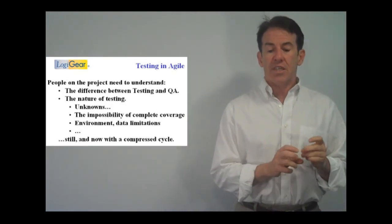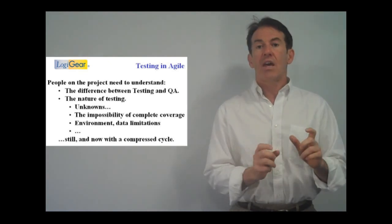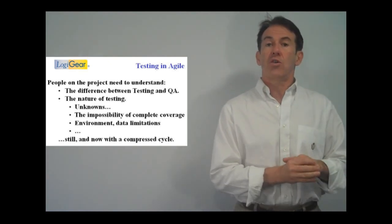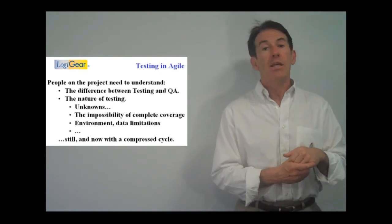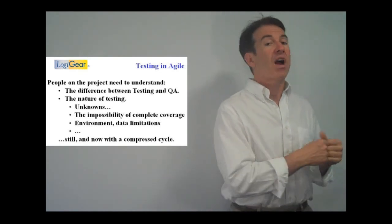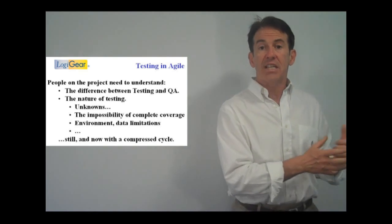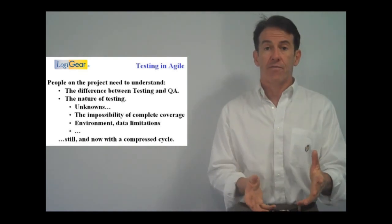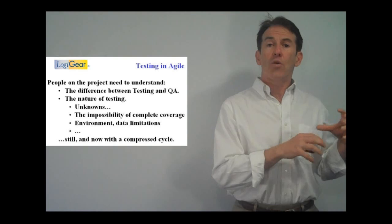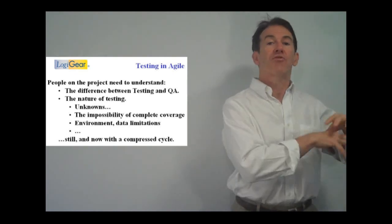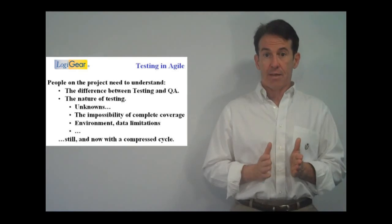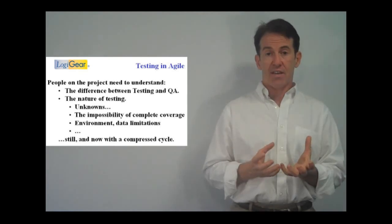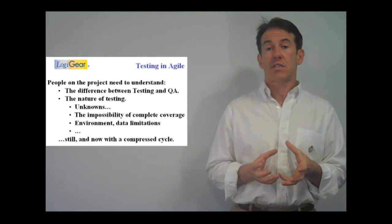The team also has to understand the difference between testing and what QA is. So quality assurance, guaranteeing quality, in anybody's definition, is as much about process as it is about the software itself. And that whole idea of what happens during the project, the process that we follow, is really removed from the team, if I use that definition of what the team is in Scrum.